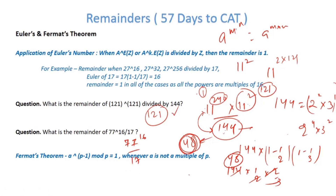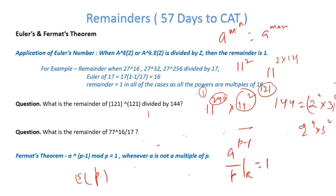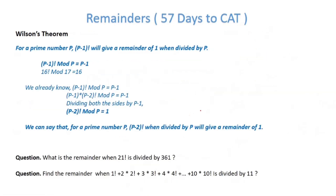Quick check: 77¹⁶ ÷ 17. Since 17 and 77 are co-prime and φ(17) = 16, the remainder is 1. Now Fermat's theorem: for any prime p, a^(p−1) ÷ p gives remainder 1, when a and p are co-prime. This is essentially the same as Euler's theorem since for a prime p, φ(p) = p − 1. Same example: 77¹⁶ ÷ 17, where 17 is prime and 16 = 17 − 1, so remainder is 1.